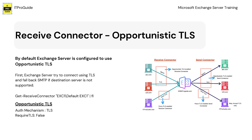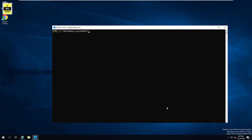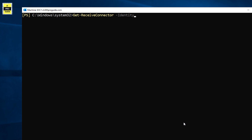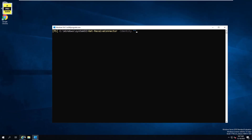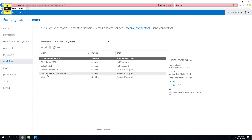The first thing we are going to see is opportunistic TLS configuration in a receive connector. By default Exchange Server is configured to use opportunistic TLS, so you don't need to do anything. But let's see the configurations in a receive connector related to opportunistic TLS. We have two points to verify: TLS is enabled in the authentication mechanism, and the require TLS option should be false. I have logged into my Exchange Server and the Exchange Management Shell is also open. Type Get-ReceiveConnector then the identity — the name of the receive connector.